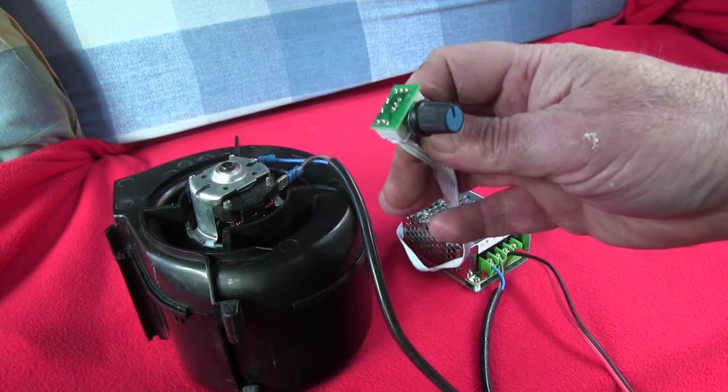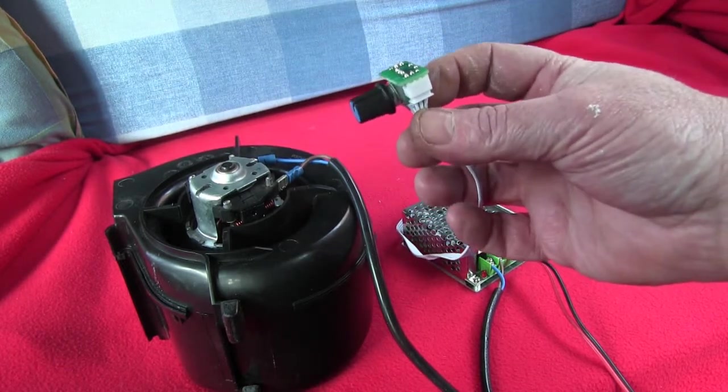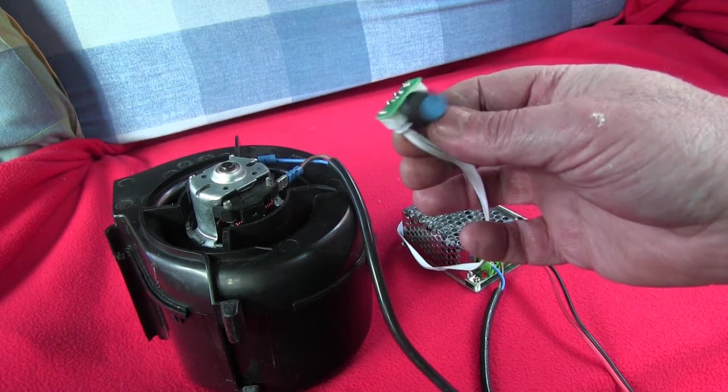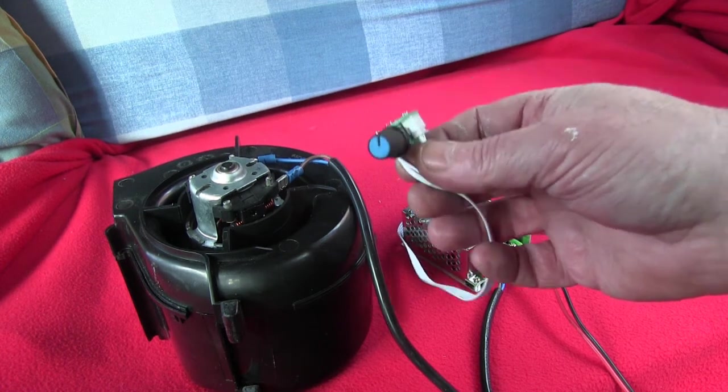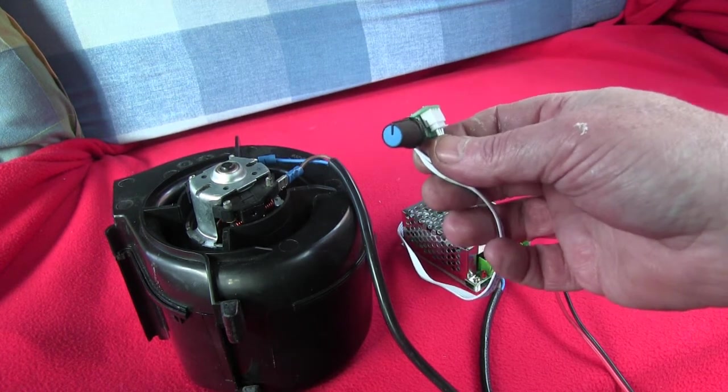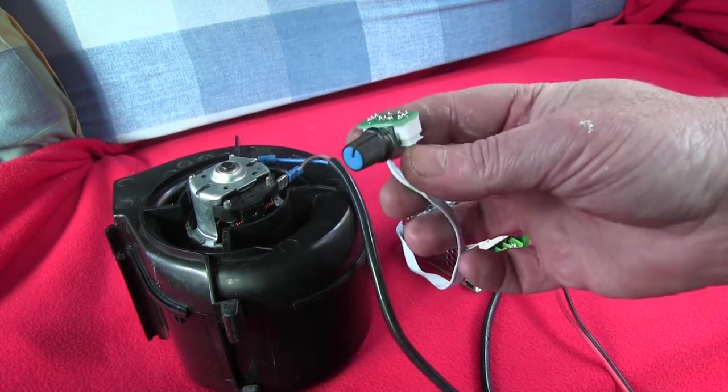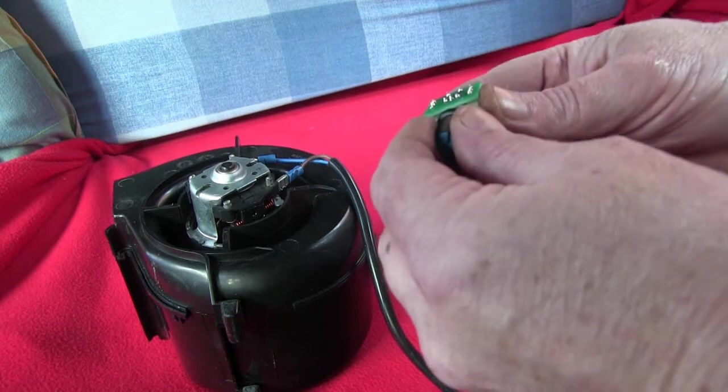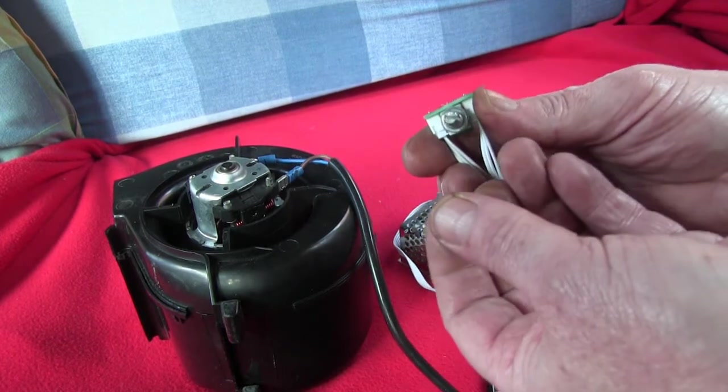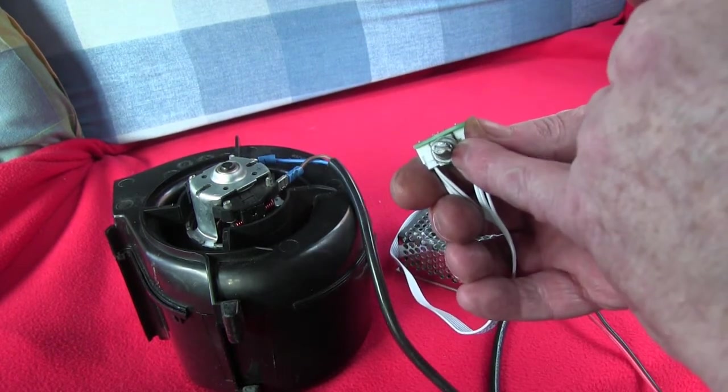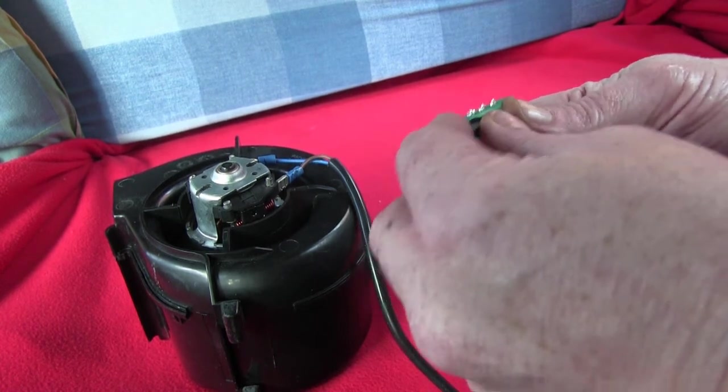And the nice thing about having this as a separate on a fly lead is that you can put it back through where the existing fan controller switch was. Just cannibalise the switch, gut the insides of it, so you've just got a hole to be able to push this through, screw the nut on, because of course the knob pulls off like that. And there's a little nut there to screw it through the hole, and put your knob back on again.